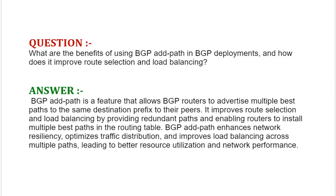Our next interview question is: What are the benefits of using BGP Add-Path in BGP deployments and how does it improve route selection and load balancing? BGP Add-Path is a feature that allows BGP routers to advertise multiple best paths to the same destination prefix to their peers. It improves route selection and load balancing by providing redundant paths and enabling routers to install multiple best paths in the routing table. BGP Add-Path enhances network resiliency, optimizes traffic distribution, and improves load balancing across multiple paths, leading to better resource utilization and network performance.